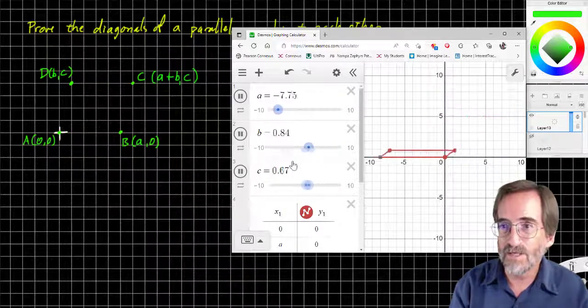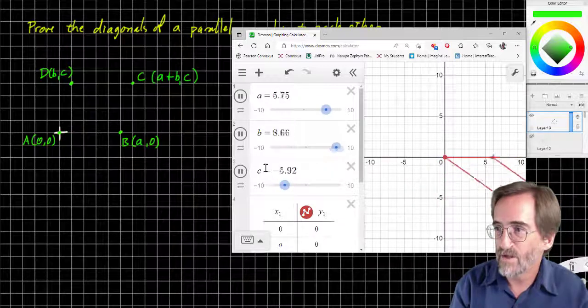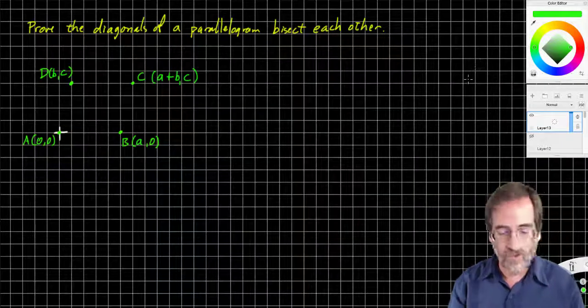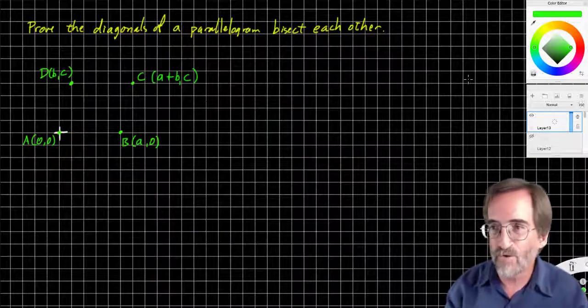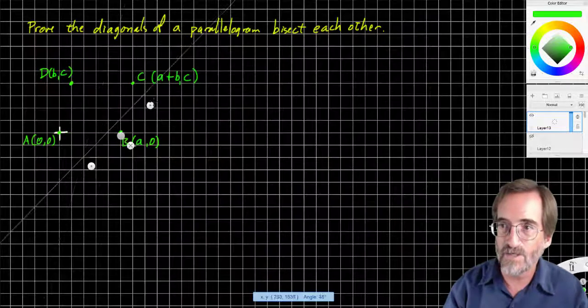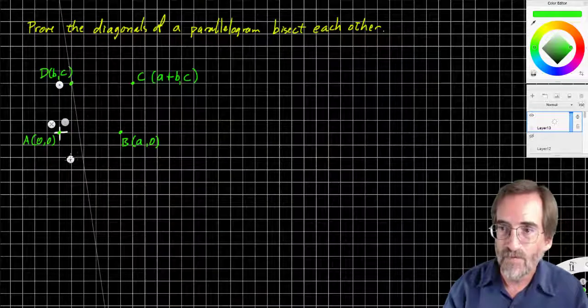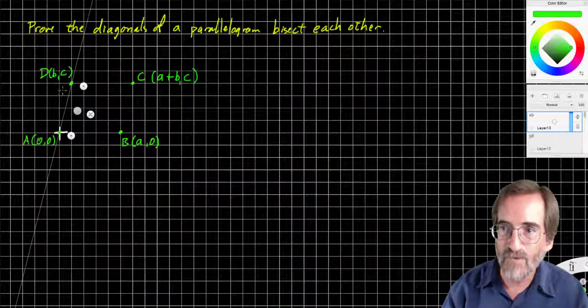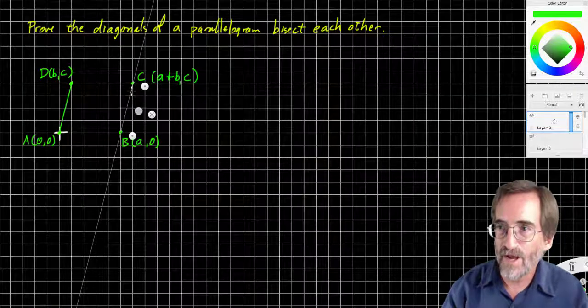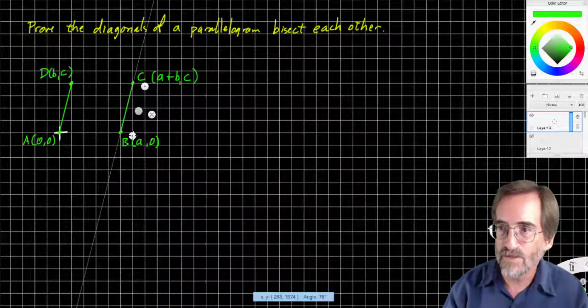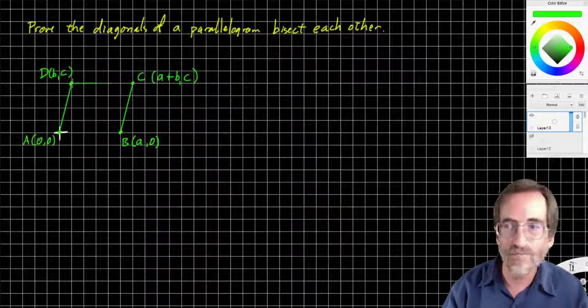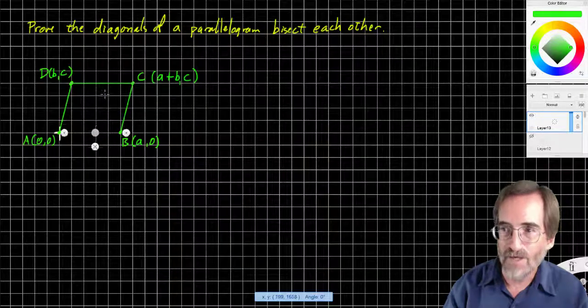Because a, b, and c get to be any number that we like. Let's put a pause on it. That's the big idea. And so now any proof I do with these letters is a proof that applies to all parallelograms, not just the one I have drawn. So let's go ahead and finish drawing the parallelogram and let's finish our proof now.